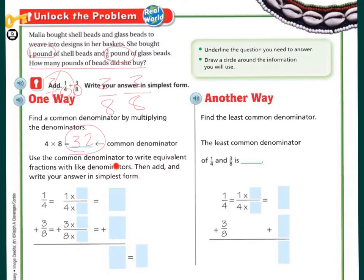Use the common denominator to write the equivalent fractions with like denominators. Then add and write your answer in the simplest form. So 1 times 8, and whatever you do to the top, you have to do to the bottom. So 1 times 8 is going to be 8, and 4 times 8 is going to be 32. And over here, we have 3 times 4 and 8 times 4. The reason I picked 4 on the bottom is because 8 times 4 is 32, and we had already decided that 32 was going to be our denominator.